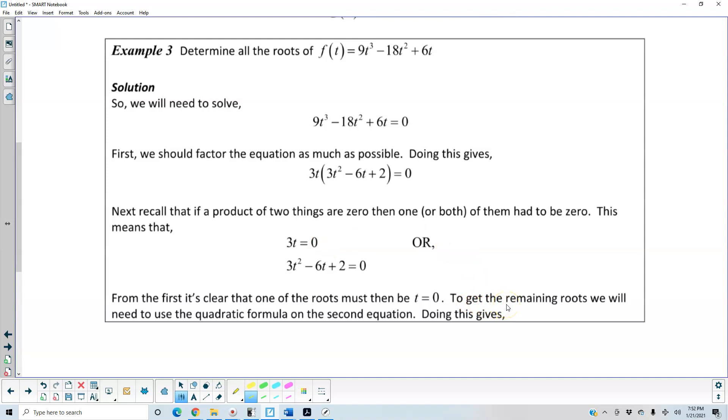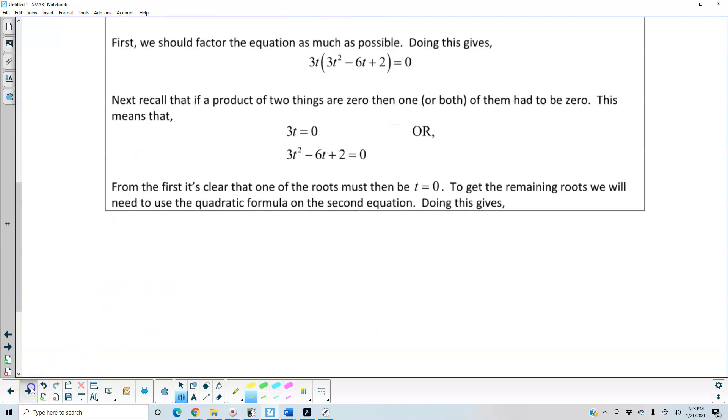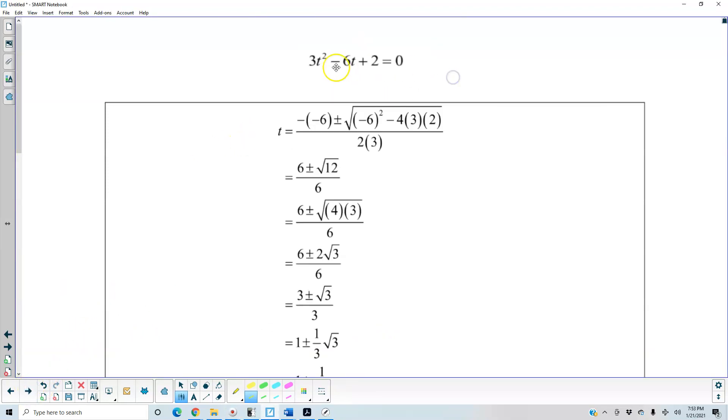To get the remaining roots, we will need to use the quadratic formula on the second equation. Doing this gives the following. So here's our equation: 3t² - 6t + 2 = 0.